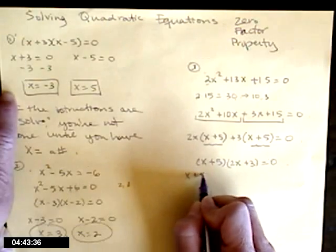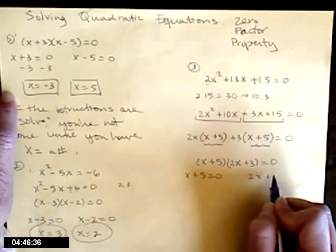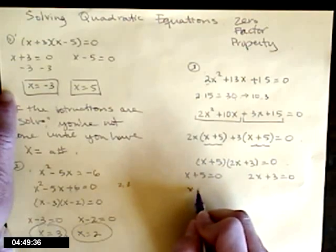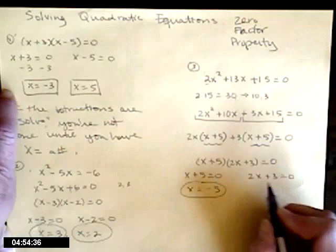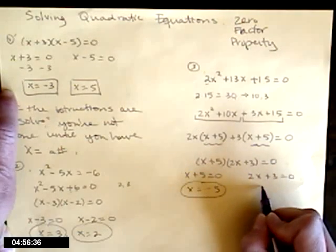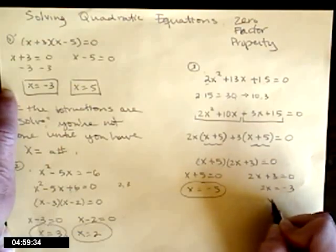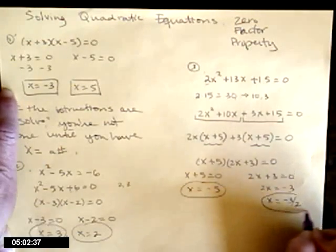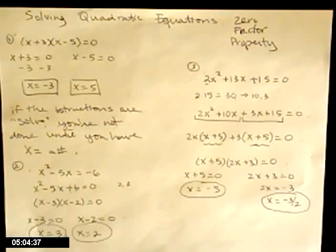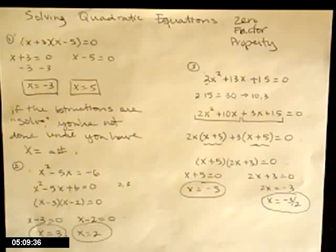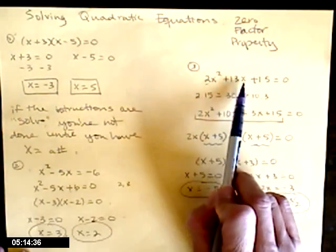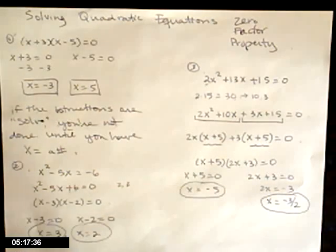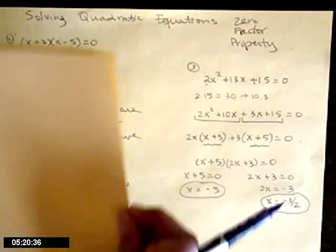So either x plus 5 equals 0 or 2x plus 3 equals 0. The first gives x equals negative 5. For the second, subtract 3 from both sides, then divide both sides by 2. Two solutions — that's what happens most of the time. If you want to check, plug negative 5 back in and see that everything works out.